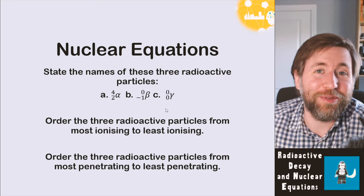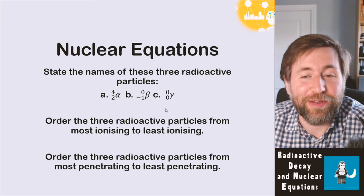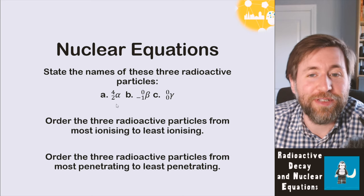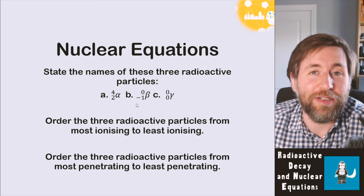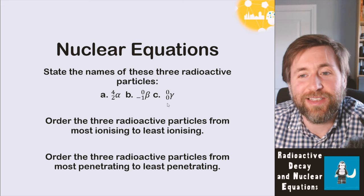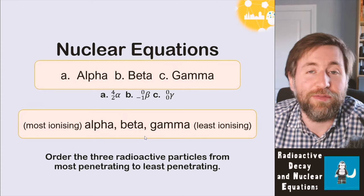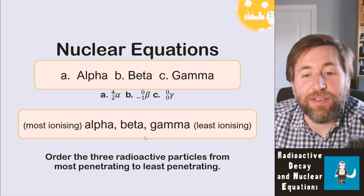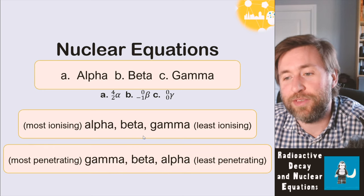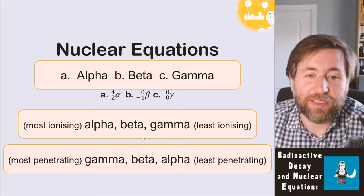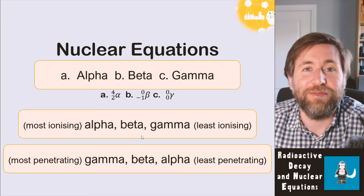Pause the video and check you can do these things. You need to memorize the codes: alpha is four mass and two proton number, beta is a high-speed electron with minus-one charge and zero mass, and gamma has no charge and no mass. You need to put them in order from most to least ionizing — alpha is most, gamma is least. And from most to least penetrating — gamma is most, alpha is least. The risk is a balance of ionization and penetration; they are all as risky as each other.